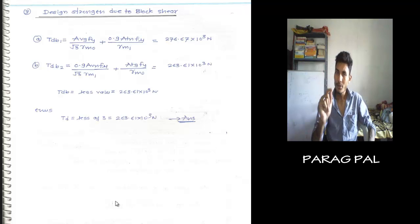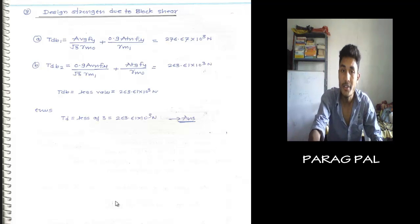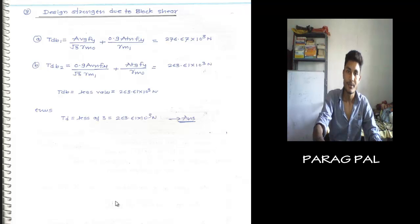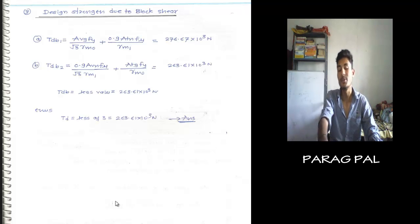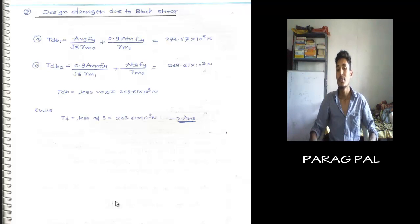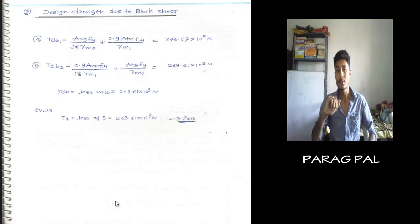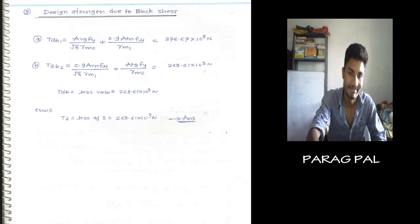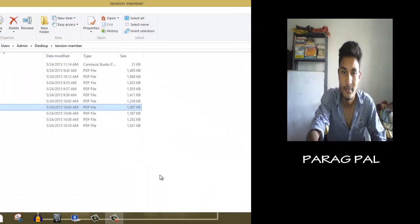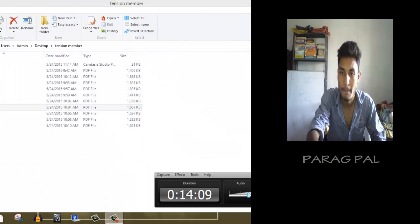From gross section, rupture, and block shear, take the minimum value of Td — that is your answer. The tensile carrying capacity comes out to 263.61. Remember, this value is always greater than the first value. Thank you for watching my tutorial. Notes are available at the link listed on my blog website, which I will make ready very soon. Thank you.